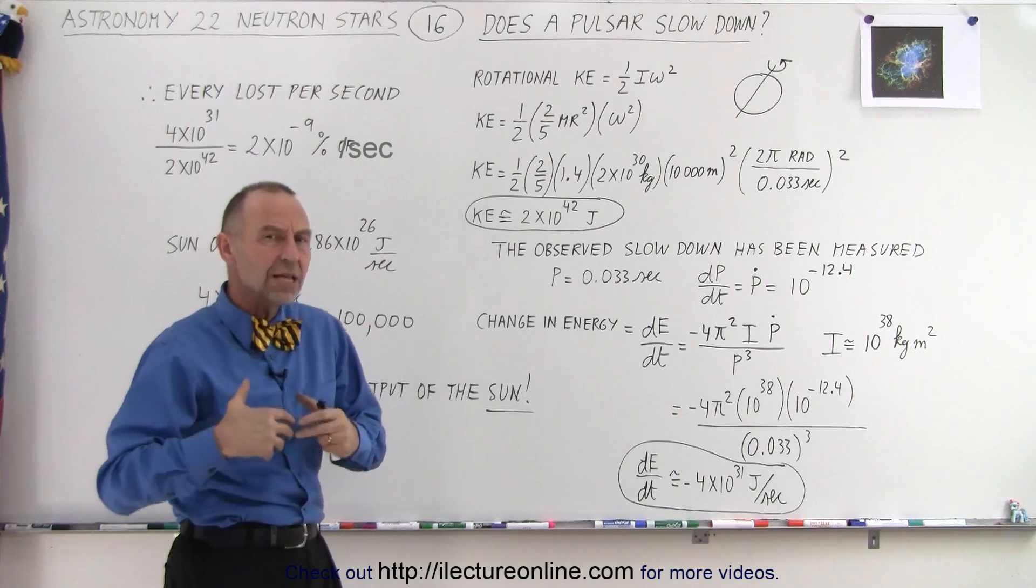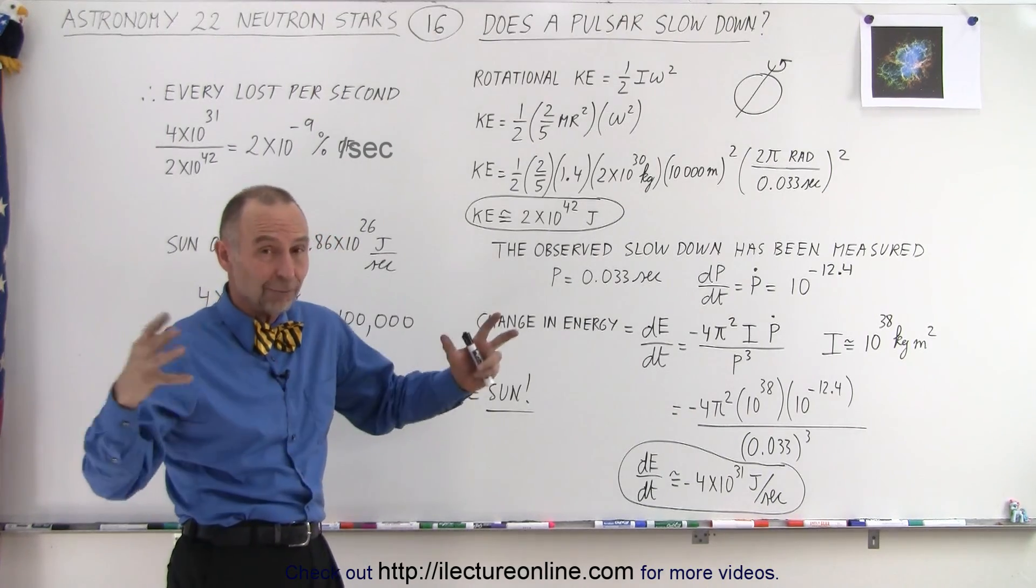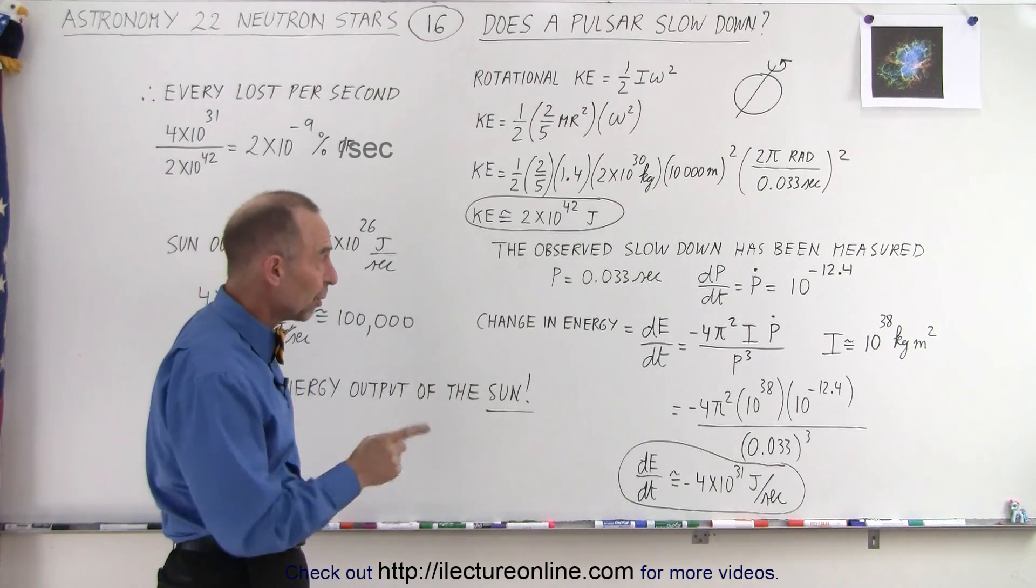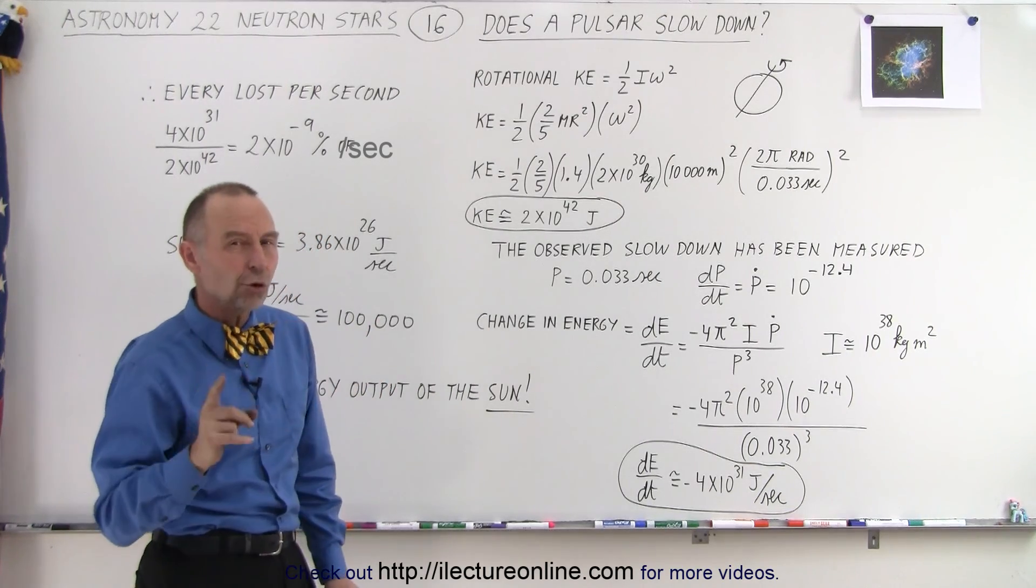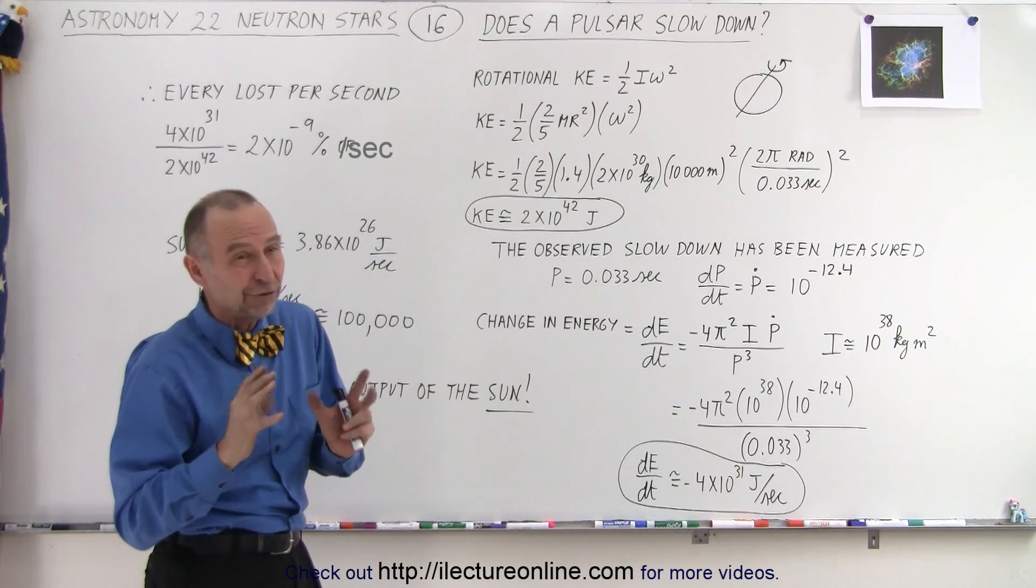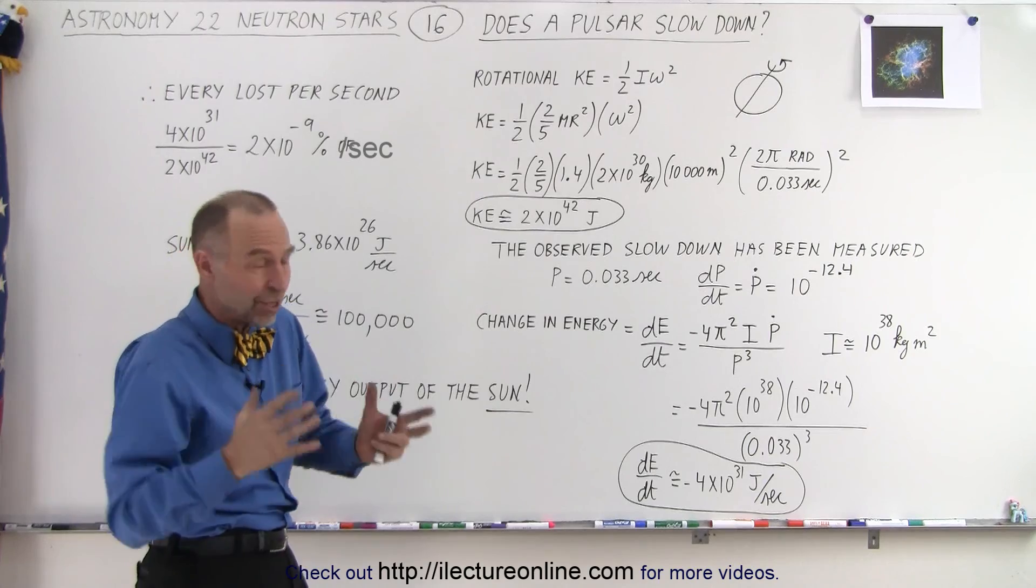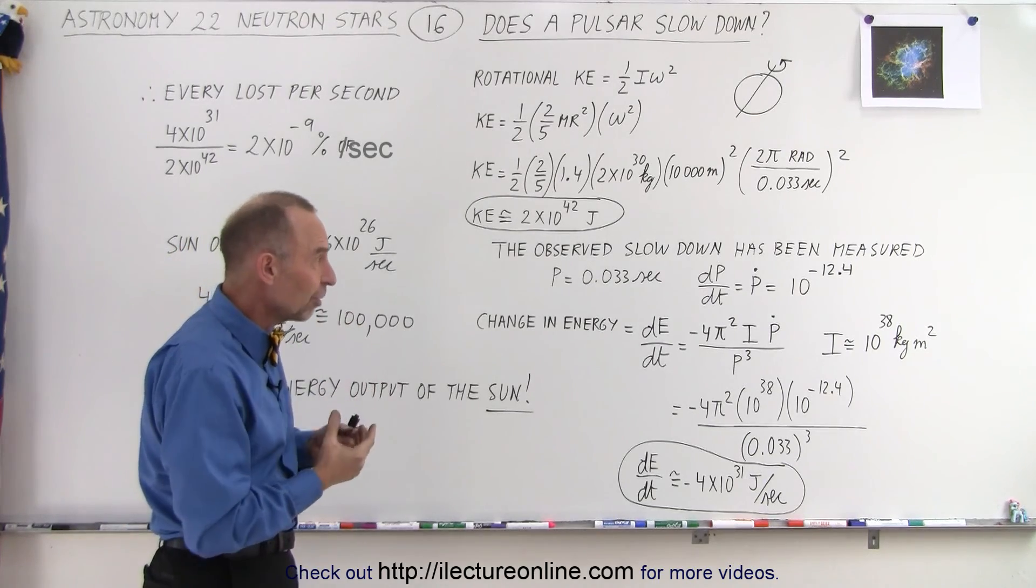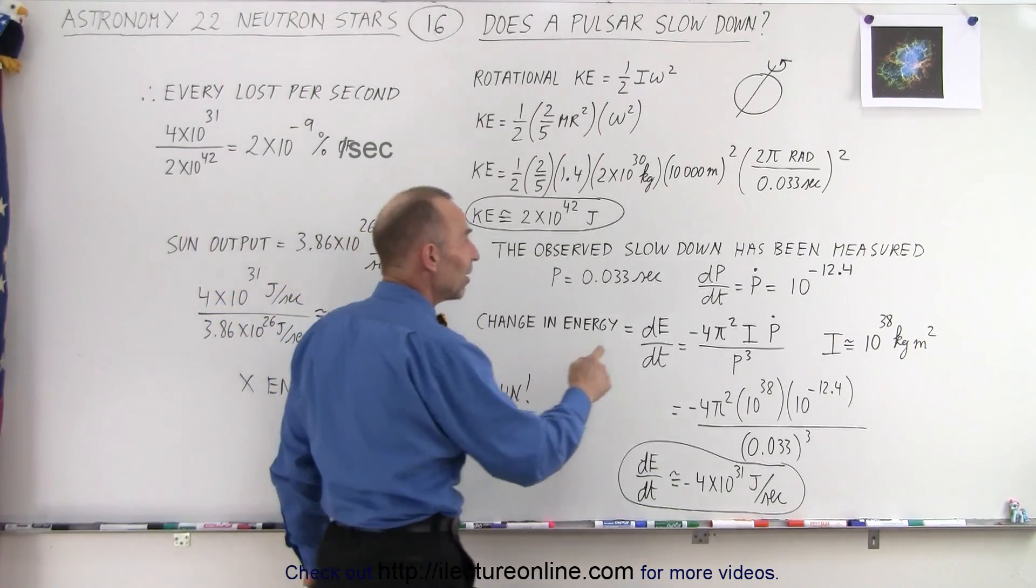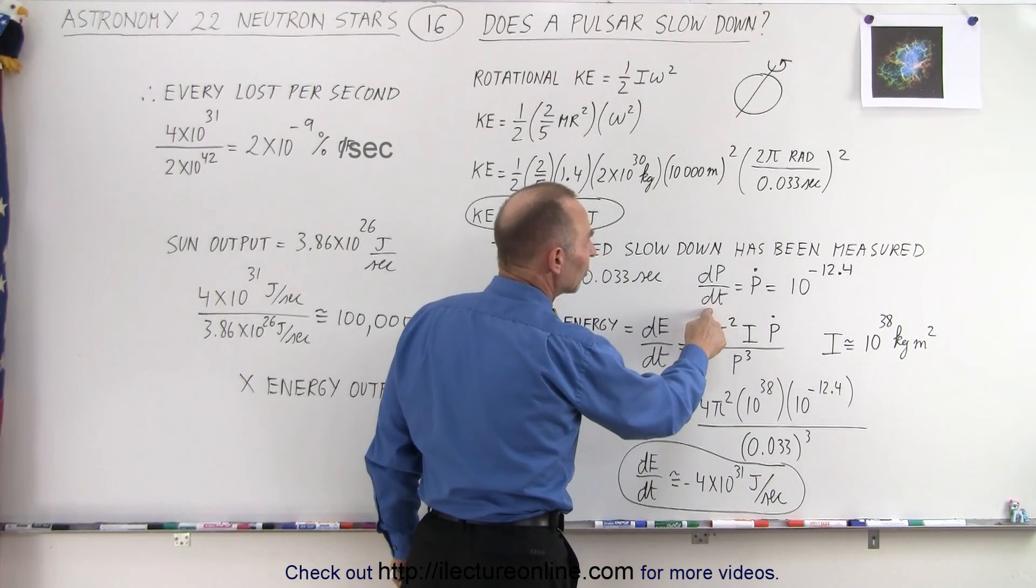Now, how much energy does the pulsar lose? We have a hard time trying to measure that by measuring all its radiation, but what we can do is we can notice that the pulsar is actually slowing down. Very small amounts per second, very small amounts per day and per year. But as we observe that pulsar, we can see that there's a very minute change in its velocity.